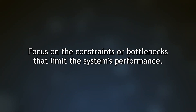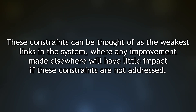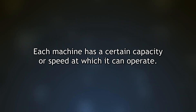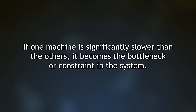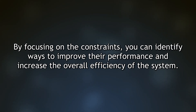Lesson 2: Focus on the constraints or bottlenecks that limit the system's performance. In order to improve overall performance, it is crucial to identify and focus on the constraints or bottlenecks that limit efficiency. These constraints are the weakest links in the system — any improvement made elsewhere will have little impact if these constraints are not addressed.